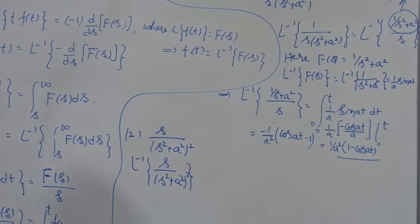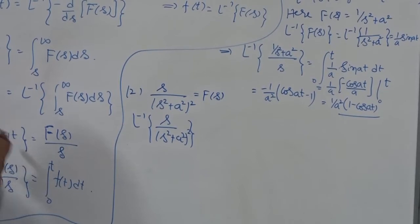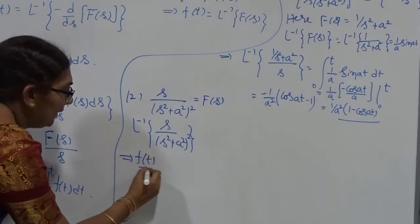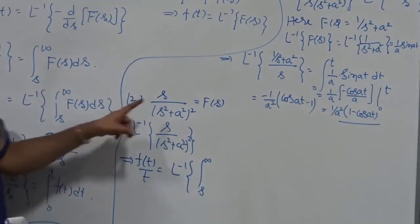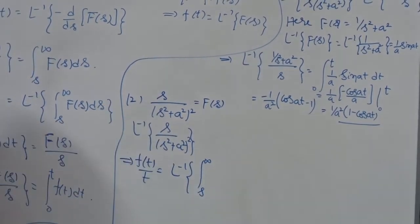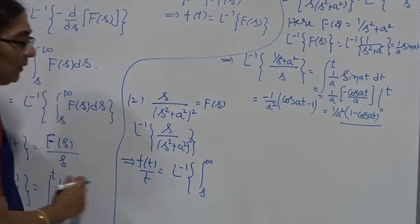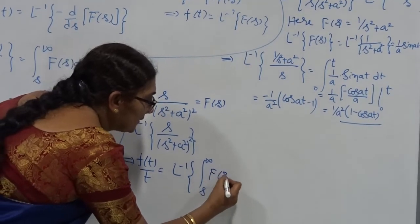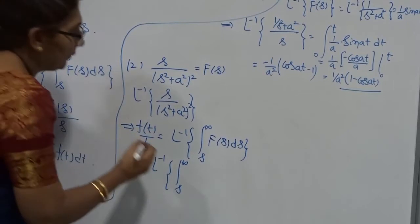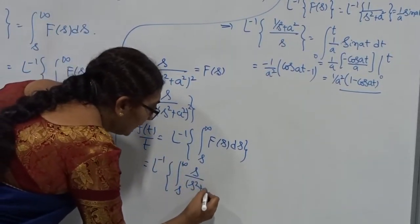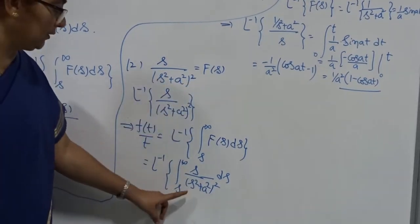Now I want to find L-inverse of s/(s² + a²)². You already know the formula from the board: f(t)/t = L-inverse of the integral from S to infinity of F(s) ds. Using this formula, f(t)/t equals L-inverse of the integral from S to infinity of s/(s² + a²) ds. I verified it's possible to integrate this function from S to infinity. Now I go for substitution: put u = s² + a², which gives du = 2s ds, so s ds = (1/2) du. Substituting, s/(s²+a²)² ds becomes (1/2) du/u².